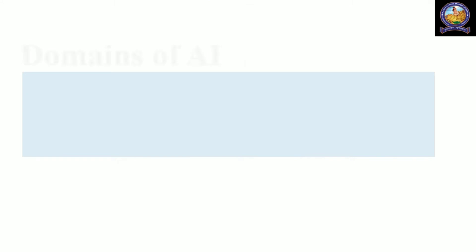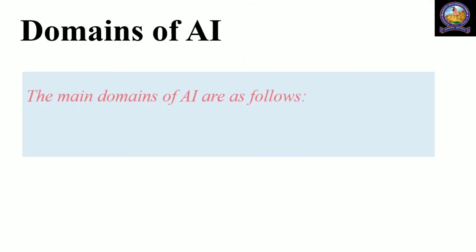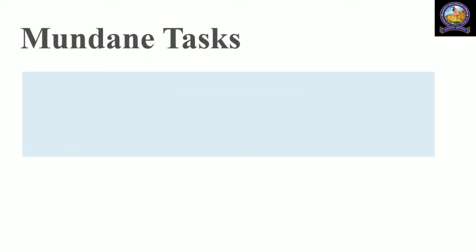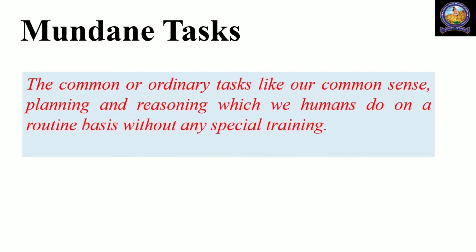Hello everyone, today's class is on domains of AI. The main domains of AI are as follows: mundane tasks, formal tasks, and expert tasks. Mundane tasks are the common or ordinary tasks like our common sense, planning, and reasoning which humans do on a routine basis without any special training. AI gadgets also do the same things like us.